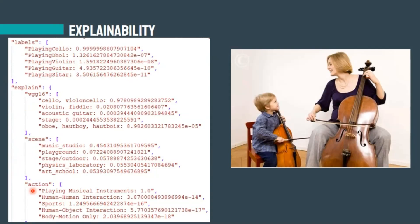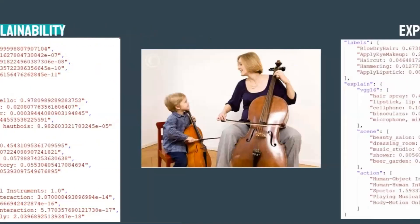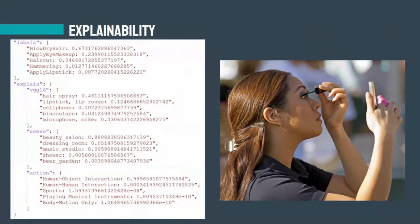This is another example from our prediction pipeline. This image belongs to the class of apply eye makeup, but it got wrongly classified as blow-dry hair. Now we can understand why: VGG16 detected a hairspray in the image, which makes sense for it to be classified as blow-dry hair. Also, the scene expert detected a beauty salon, which further explains the output class.